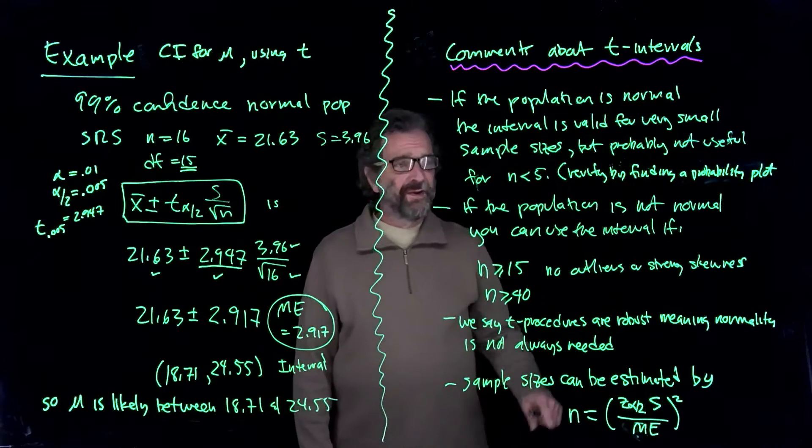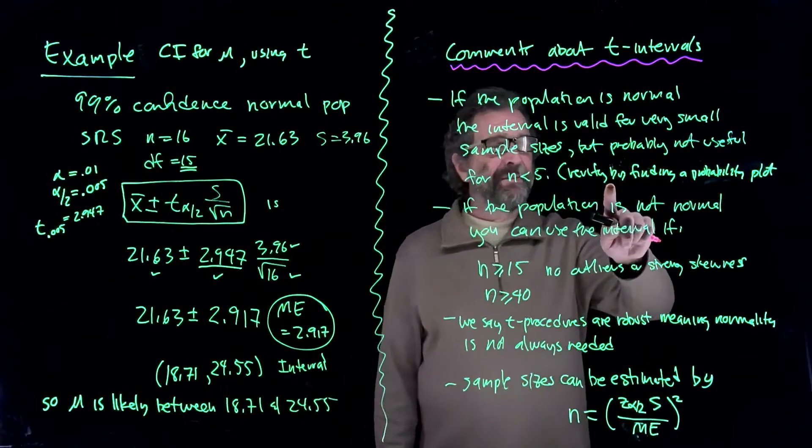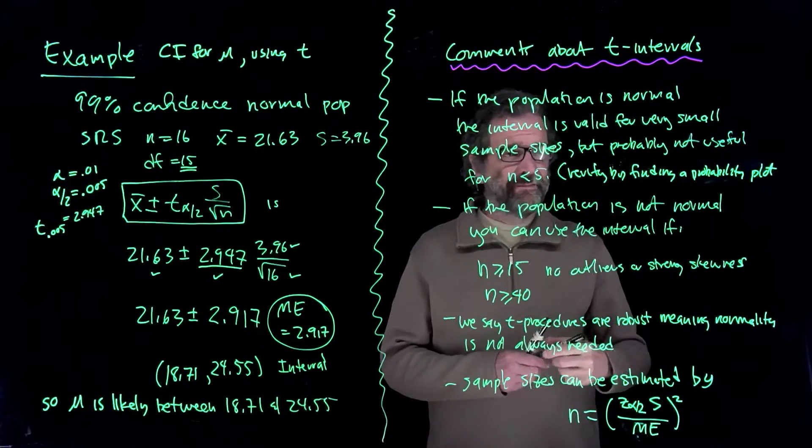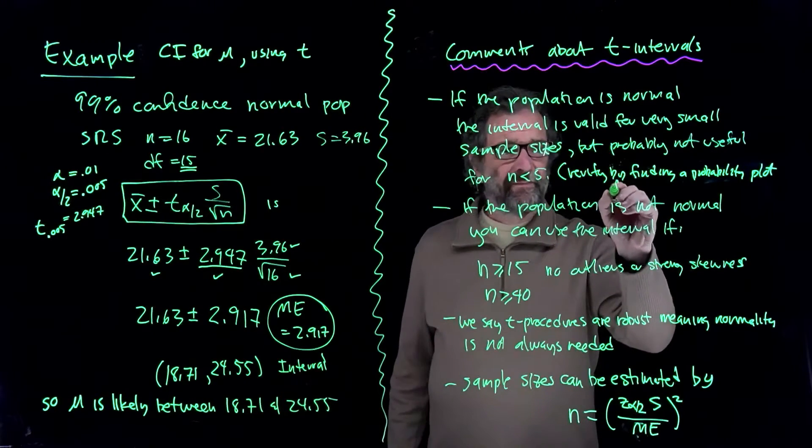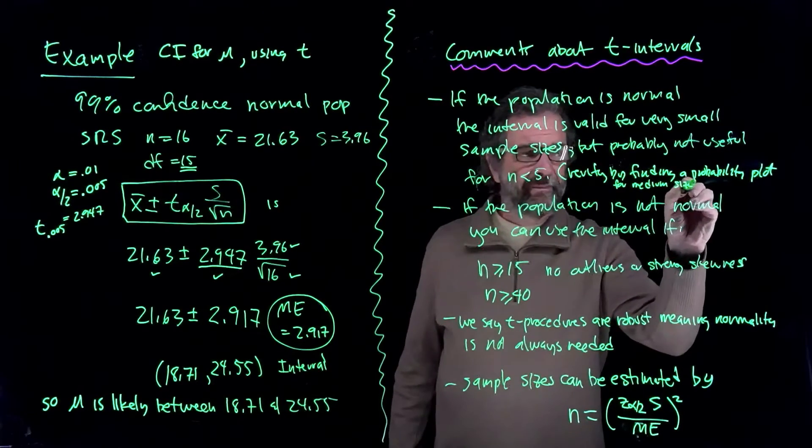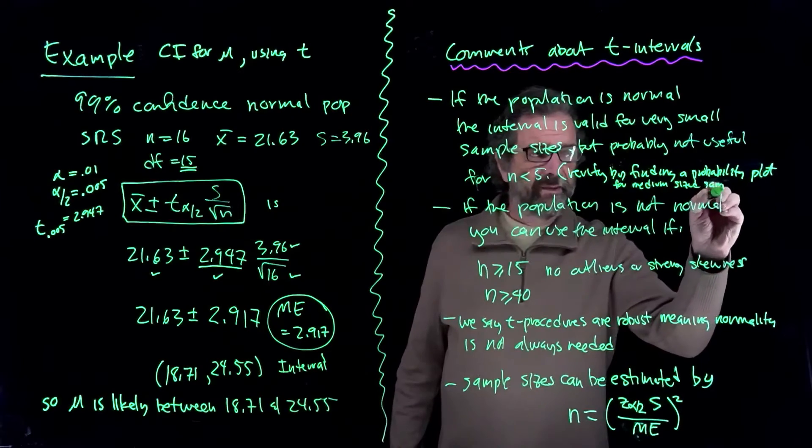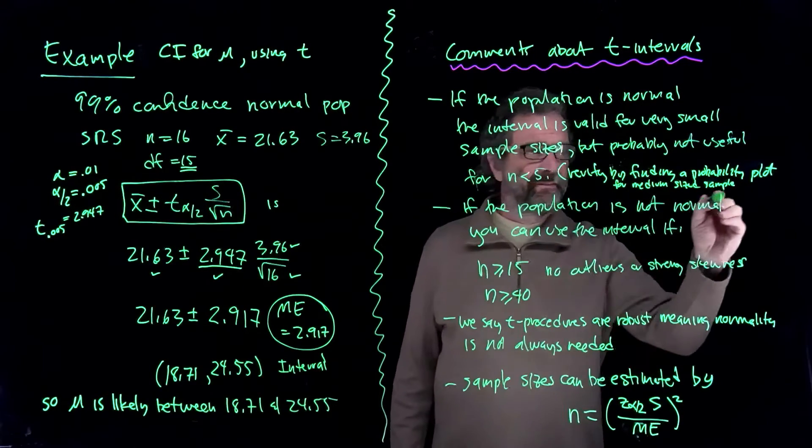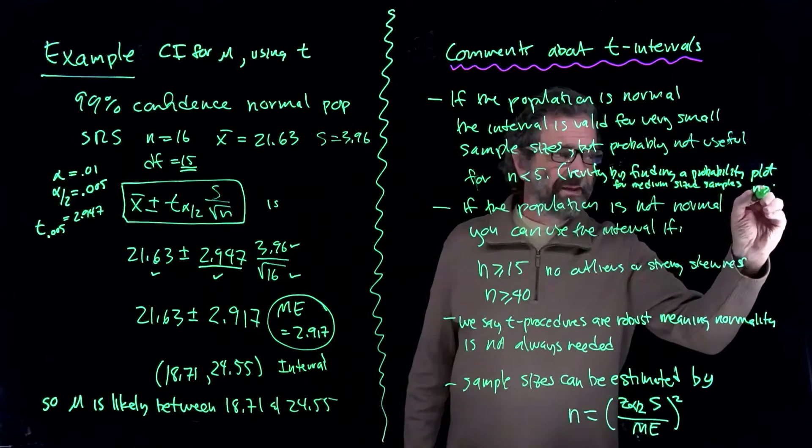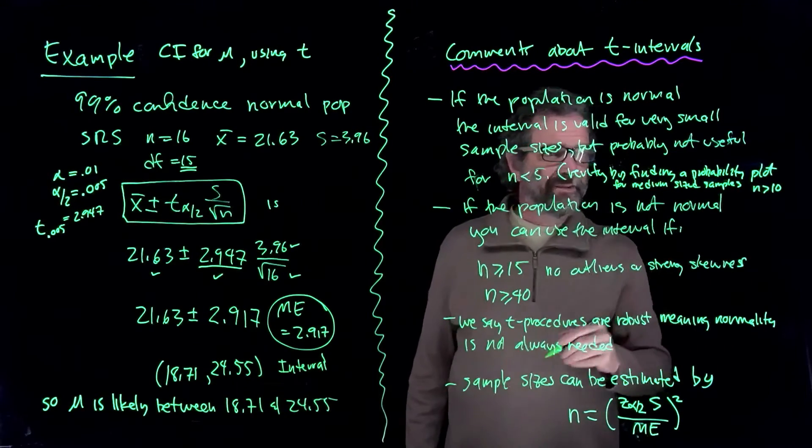So you can verify the population by finding a normal probability plot for medium-sized samples. Maybe n bigger than, say, 10 or something like that, some small number. So you can see a pattern to the probability plot.